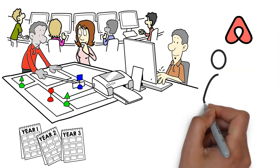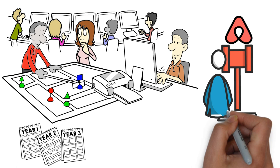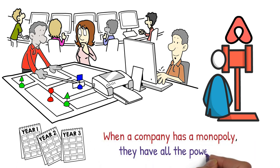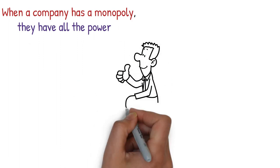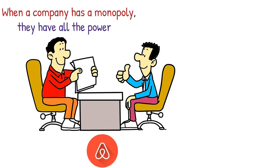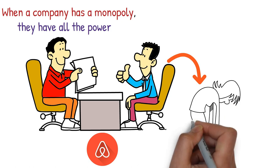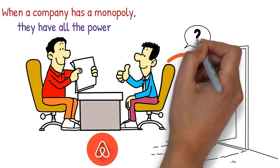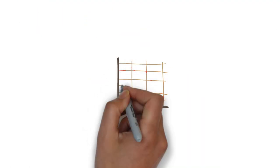Airbnb's monopoly is also causing them to lose the trust of its users. When a company has a monopoly, they have all the power. They get to make the rules and they get to decide what's best for their users. And that's precisely what Airbnb has been doing. They've been making decisions that benefit themselves rather than their users. They've ignored complaints from hosts and guests and treated their customers like they're disposable. And guess what? People are starting to notice.